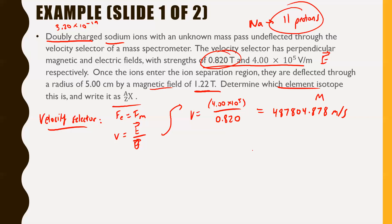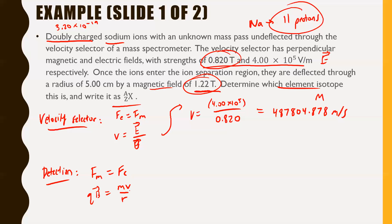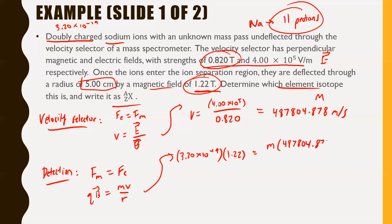In the detection chamber, FM equals FC, so QB equals MV over R. We want to find M. We have: Q equals 3.20 × 10⁻¹⁹ (doubly charged), B equals 1.22 teslas, V equals 487,804.878 m/s from the velocity selector, and R equals 0.05 meters (5 cm converted). Rearranging and calculating gives M equals 4.0016 × 10⁻²⁶ kilograms.